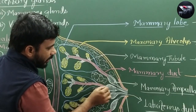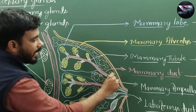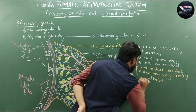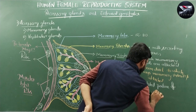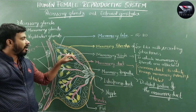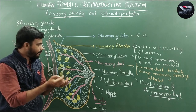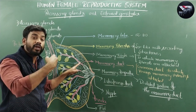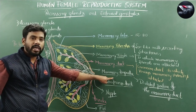The mammary ducts are dilated at their tips, and this dilated portion is called the mammary ampulla. The mammary ampulla functions as a storage site: milk secreted inside the alveolar cells reaches the lumen of the alveoli, then enters the mammary duct through the mammary tubules, and that milk is stored in the mammary ampulla before ejection.